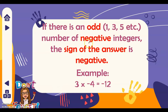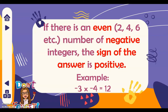If there is an odd number of negative integers — for example 1, 3, 5 — the sign of the answer is negative. For example, 3 times negative 4: you just multiply 3 times 4 which is 12, and the sign depends on the number of negative integers. There is only one negative, which is odd, therefore the sign is negative.